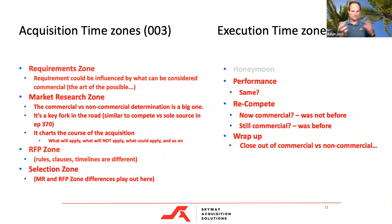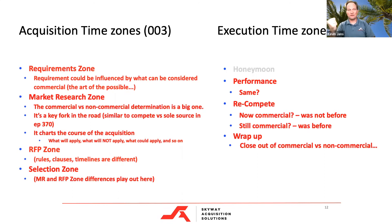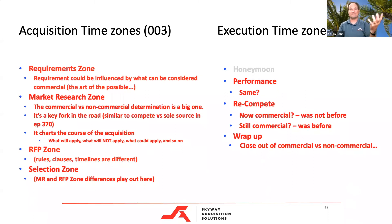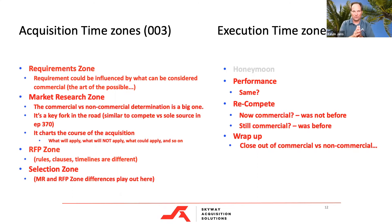A determination is based on regulatory guidance — I'm determining this based on what I'm allowed to do. A commerciality determination means: based on justification I can pull from the definition of a commercial product or service, and based on the evidence I have, I've determined this is a commercial item. That decision of whether something is commercial or not is made during the market research zone, and it's almost as critical as the sole source versus competing decision.